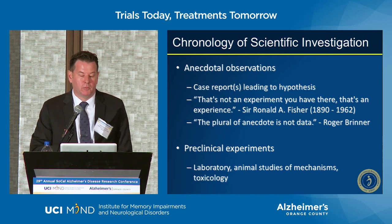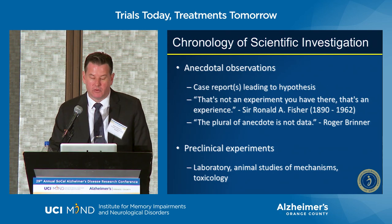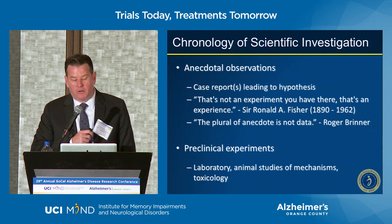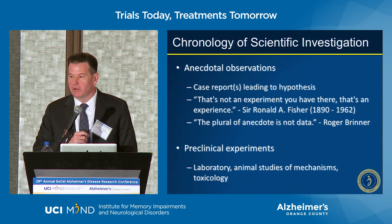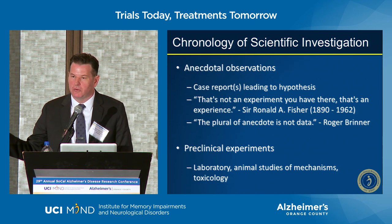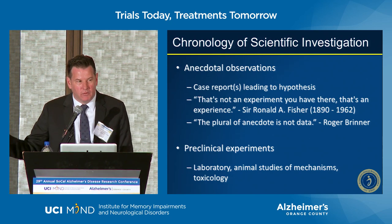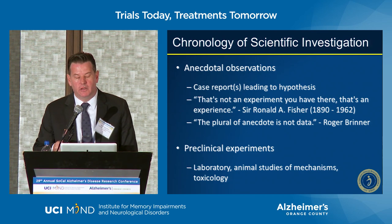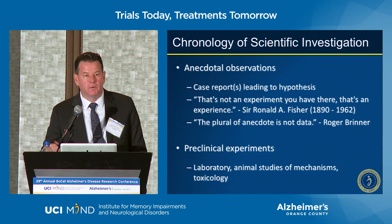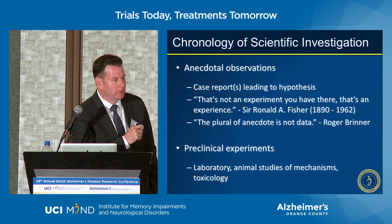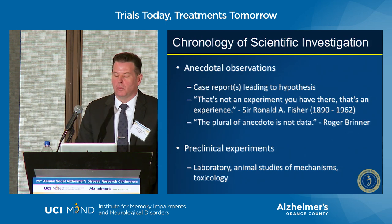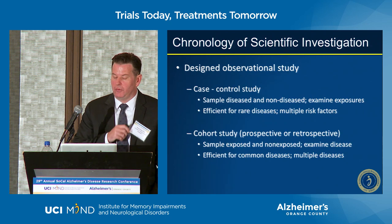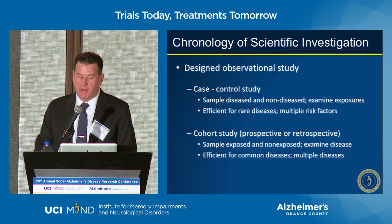We often begin with preclinical experiments. Dr. Cummings mentioned Frank's work in the lab — animal studies of mechanism and toxicology. They're absolutely critical. They help us identify the underlying pathways for disease, and taking that knowledge helps us hopefully translate it to humans and the clinical experience of humans. That's how we move through the system in a natural history manner.